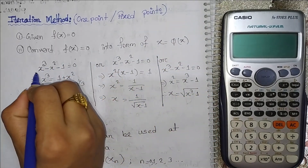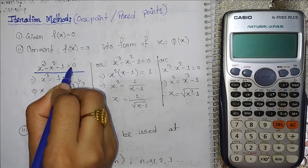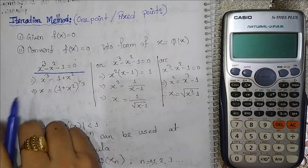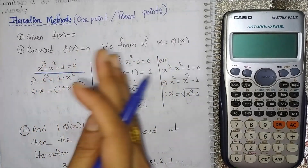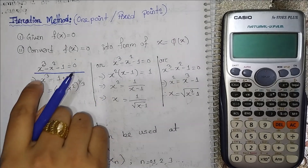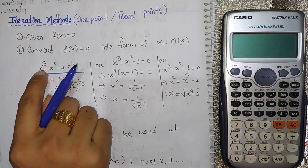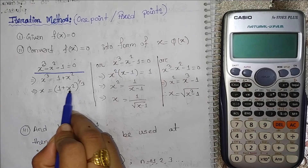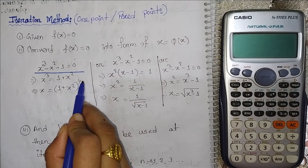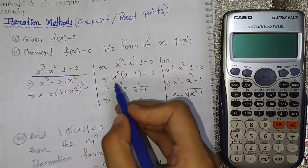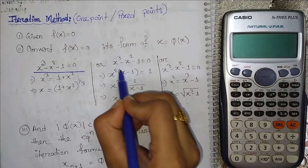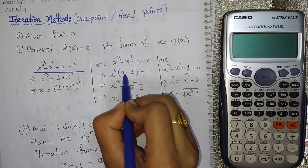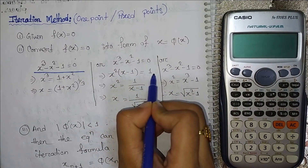We are looking at the equation x cubed minus x squared minus 1 is equal to 0. This equation can be rearranged in different ways. We are looking at x squared, and we will have 2x squared minus 2, and also x squared minus 1.